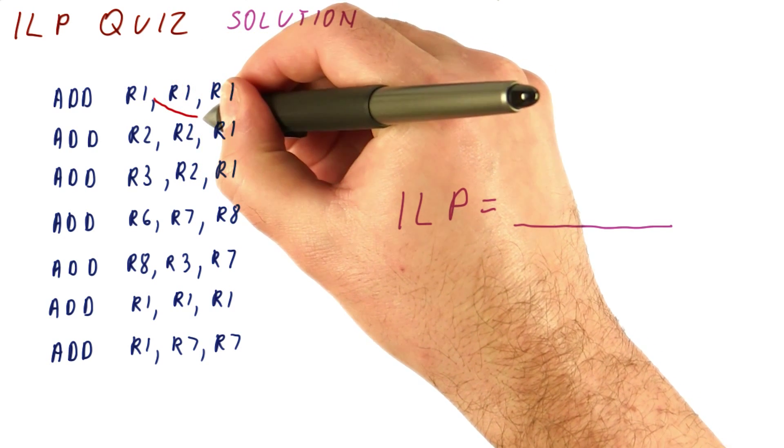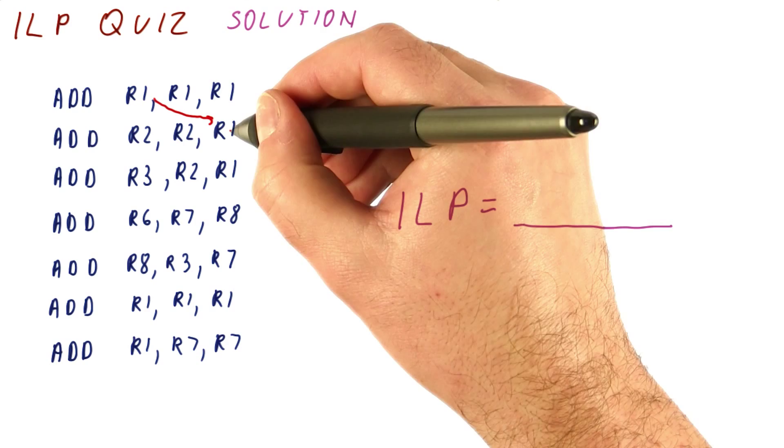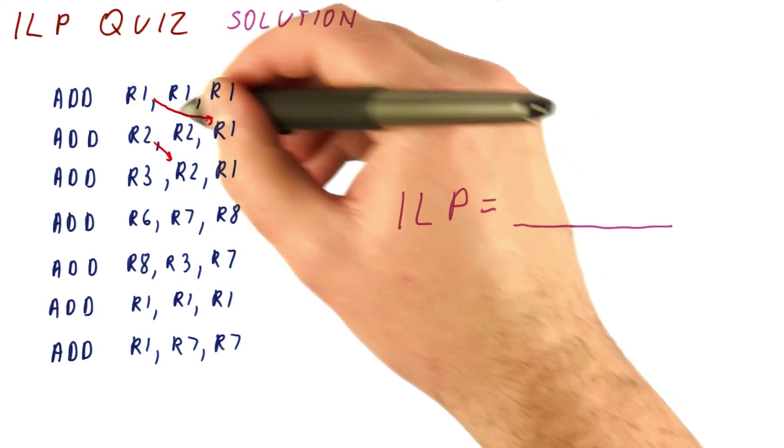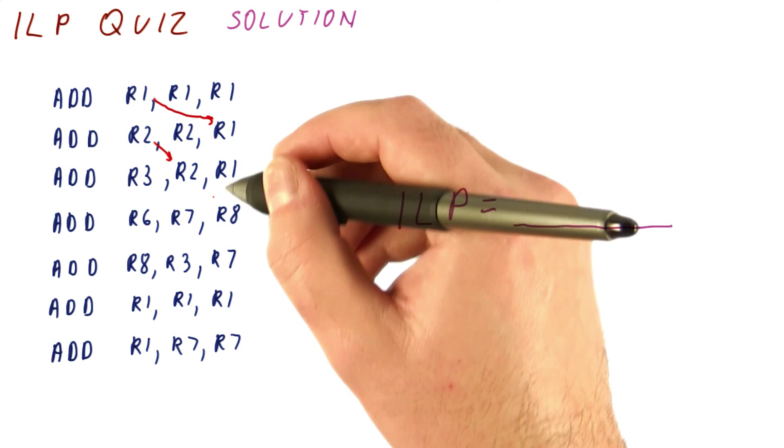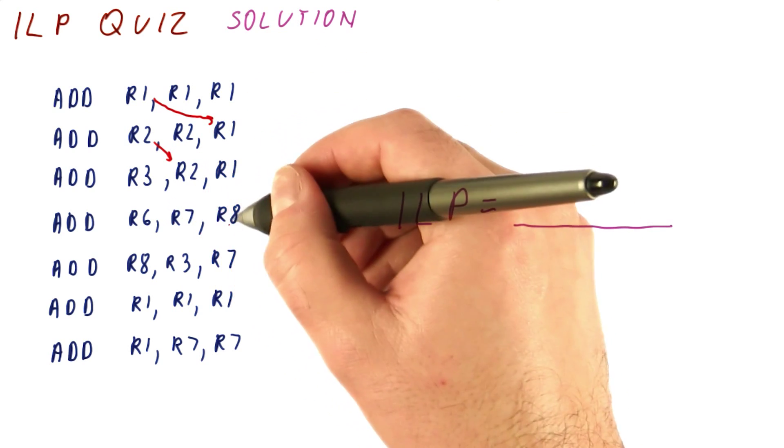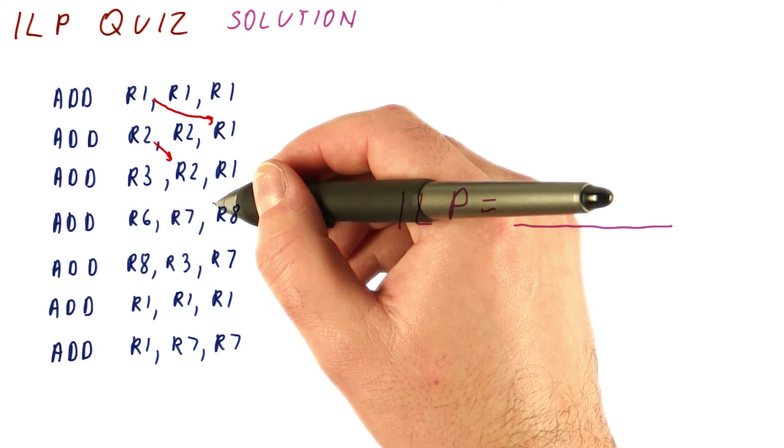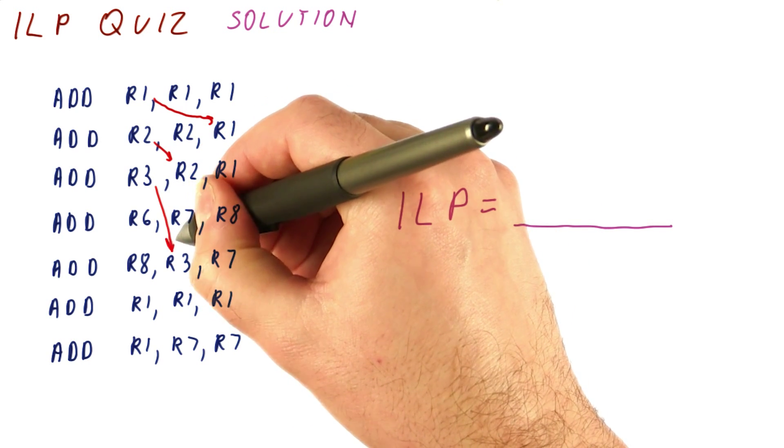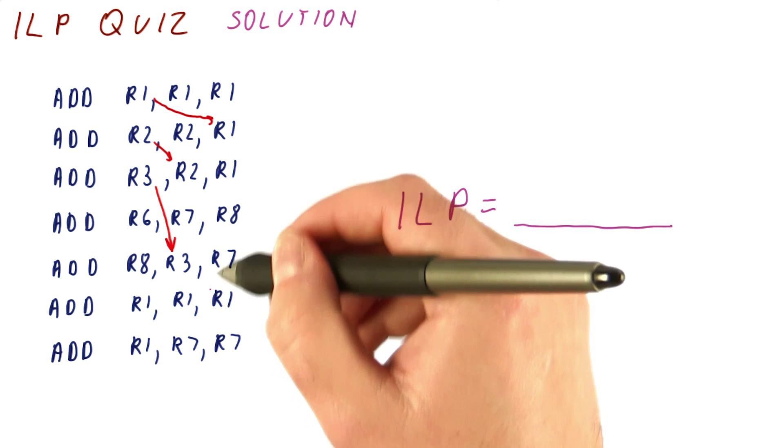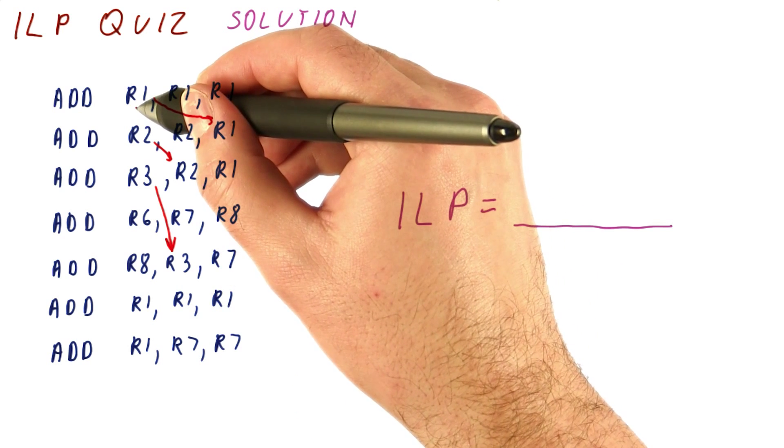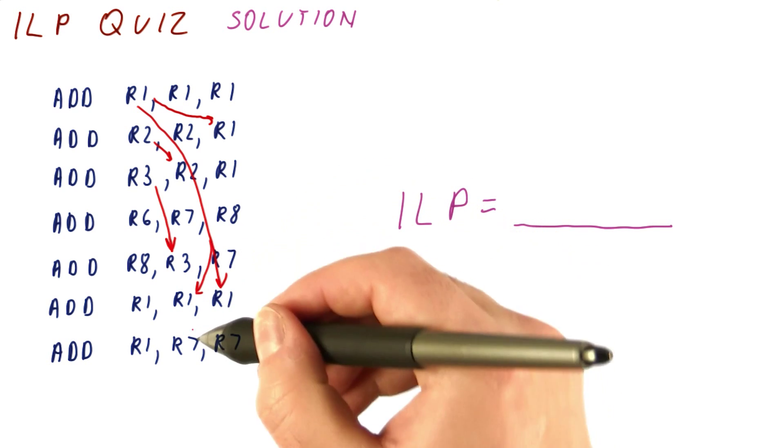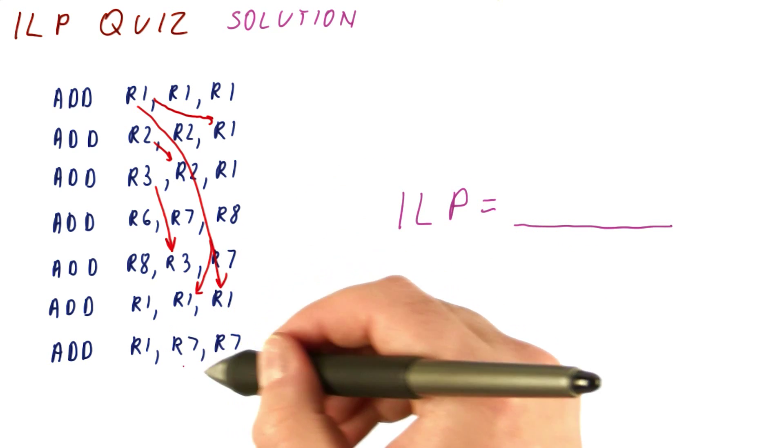So we have here, this is using R1, this is using R2 and R1, but it doesn't matter because this is going to be longer. R7 and R8 are not depending on anything yet. R3 and R7, there is a dependence here. R1 and R1, we are dependent on this instruction here for both of them. And then R7 and R7, we are not using any of them.